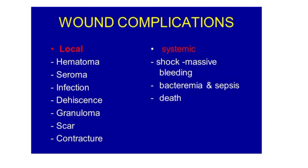If the treatment and management are not good and proper procedure is not followed, the patient may develop complications. Complications are divided into local and systemic. Local complications include hematoma, infection, dehiscence, granuloma, scar, and contraction. Systemic complications include hypovolemic shock due to massive bleeding. Local complications affect the particular area at the site of the wound.